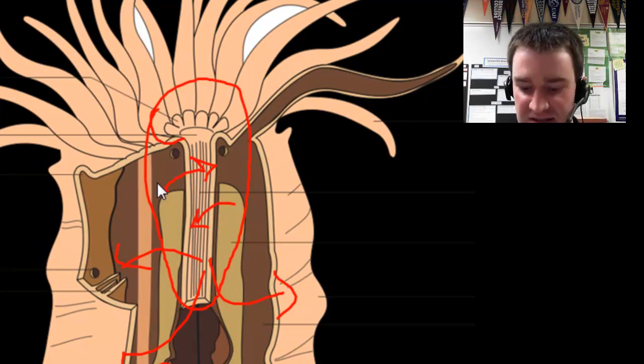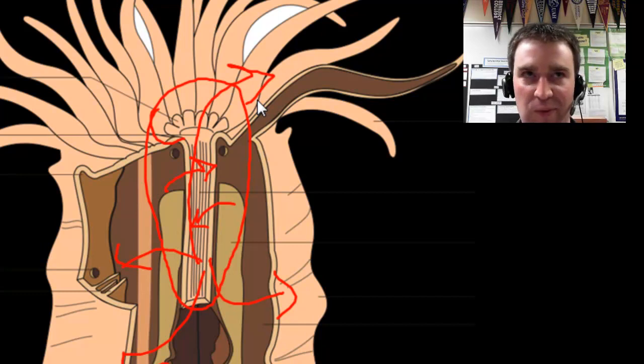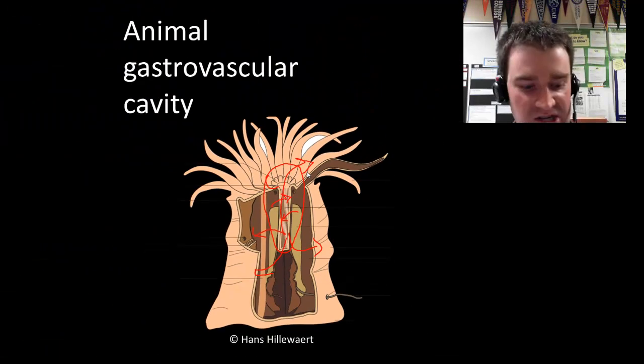What's interesting about the gastrovascular cavity is that the mouth also has to serve as the anus, or the wastes have to come back out through this same hole because there's only one way in or out of this digestive system.